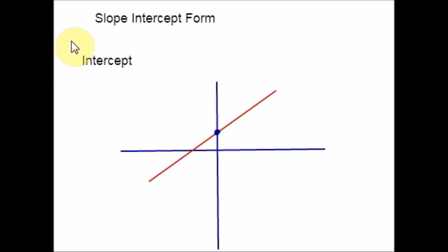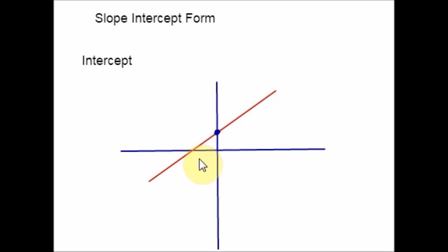In slope-intercept form, the equation of the line uses only the y-intercept. This is where the line crosses the y-axis. Please remember that the y-axis is the vertical axis that goes up and down. The y-intercept is the point where the line and y-axis meet. This graph line and the y-axis meet at this point, so this would be your y-intercept.